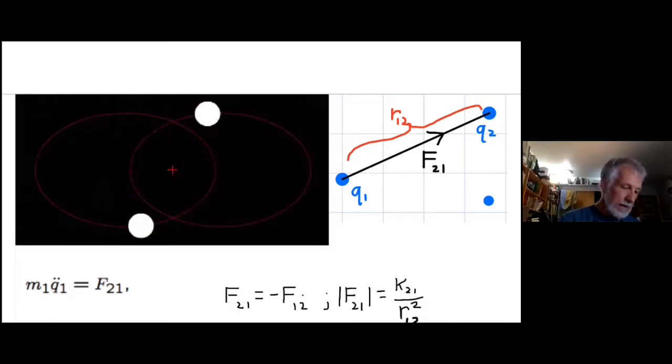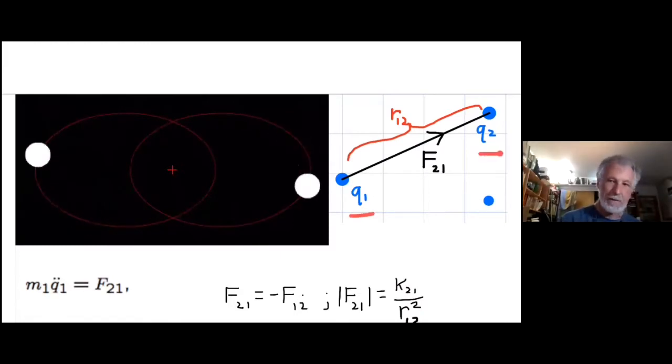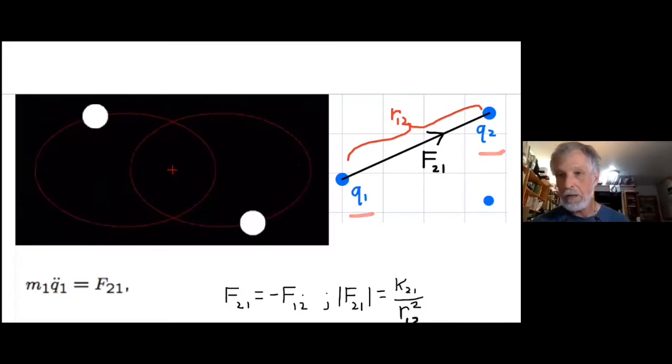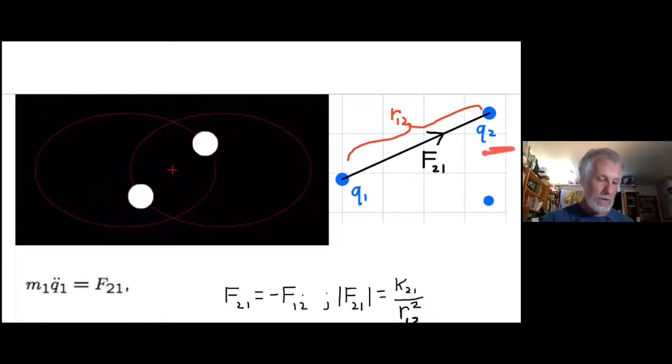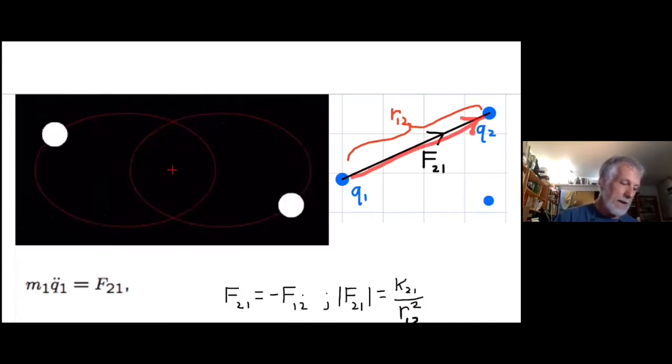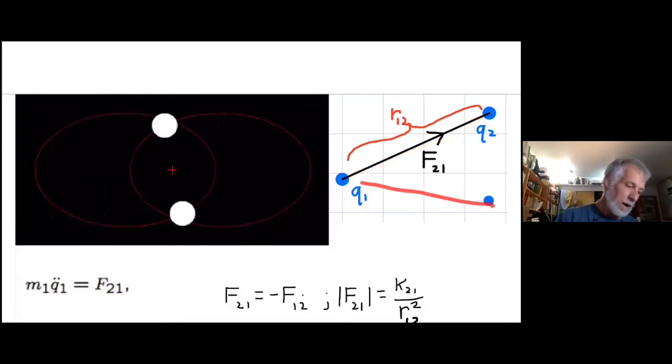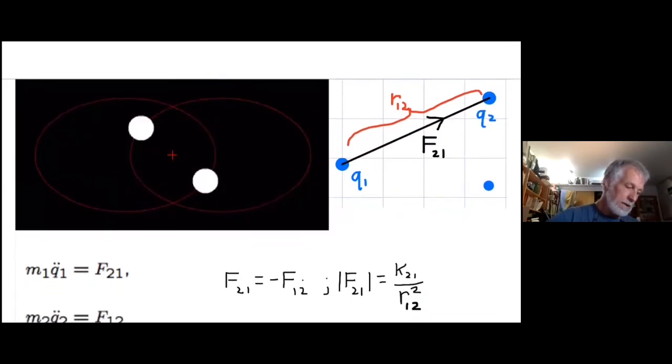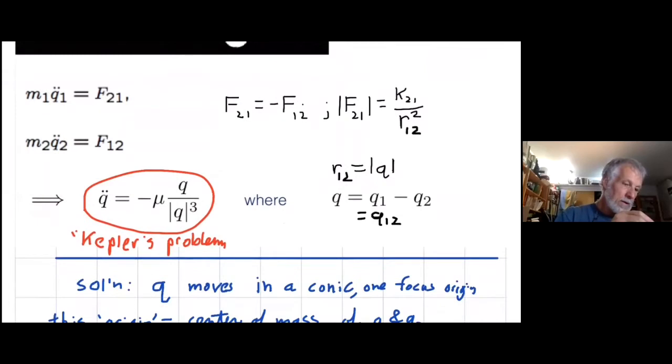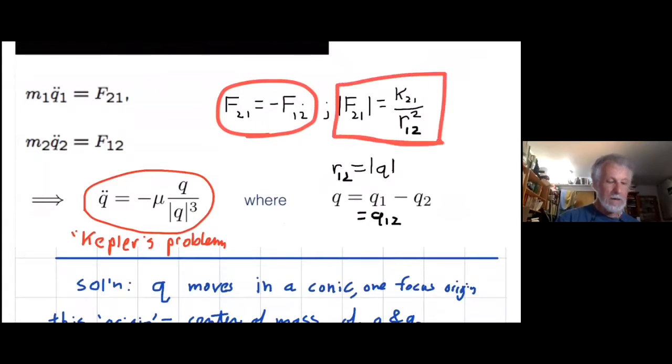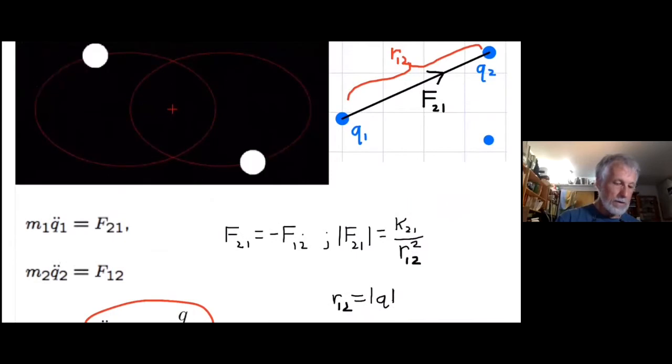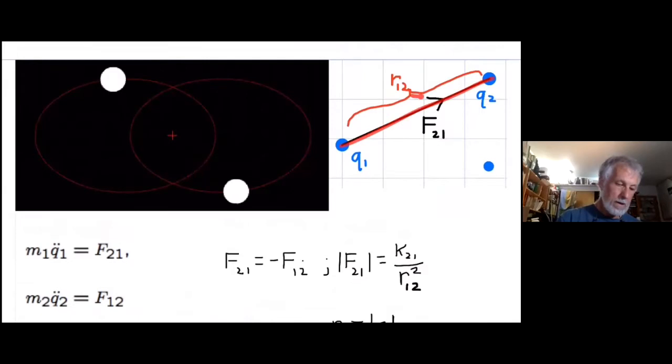So we're going to start the tour with two bodies. Here are two equal masses moving around ellipses with a focus at their center of mass. And I'm going to write down the equations. The notation is, the Qs are the locations of the masses. Can you see the Q2 on your screen? Someone give me a thumbs up because I don't know what you can see and not see.